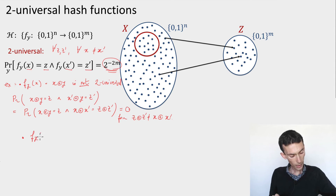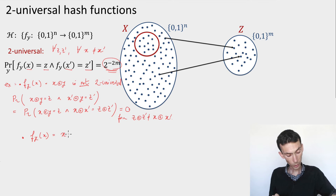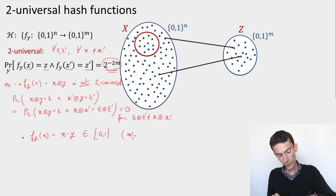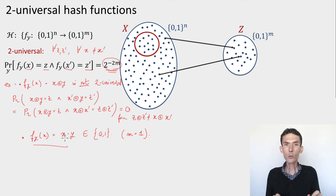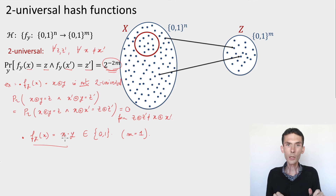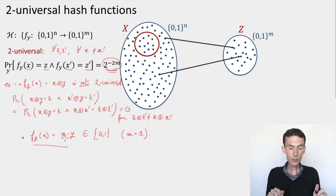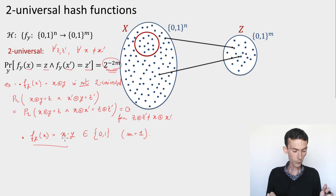Here's an example of a two-universal family we've seen before. Instead of the bit-by-bit XOR, I'm going to take f_y of x to be the inner product of x and y. This gives a single bit of output in {0, 1}, and you can check that this family satisfies the condition of two-universality. I recommend pausing the video to verify this yourself; otherwise you'll see it as part of the problem set. In the next module we're going to create a larger family of two-universal hash functions.